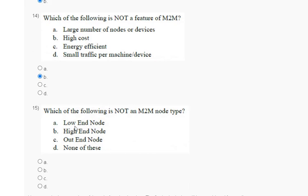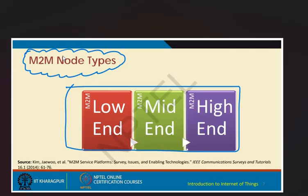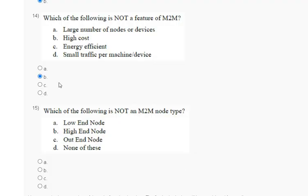Question fifteen: which of the following is not an M2M node type? Options: low end node; high end node; out end node; none of these. The explanation: M2M node types are low end, median, and high end. The correct answer for question fifteen is option C. Thank you guys, we will meet in the next assignment.